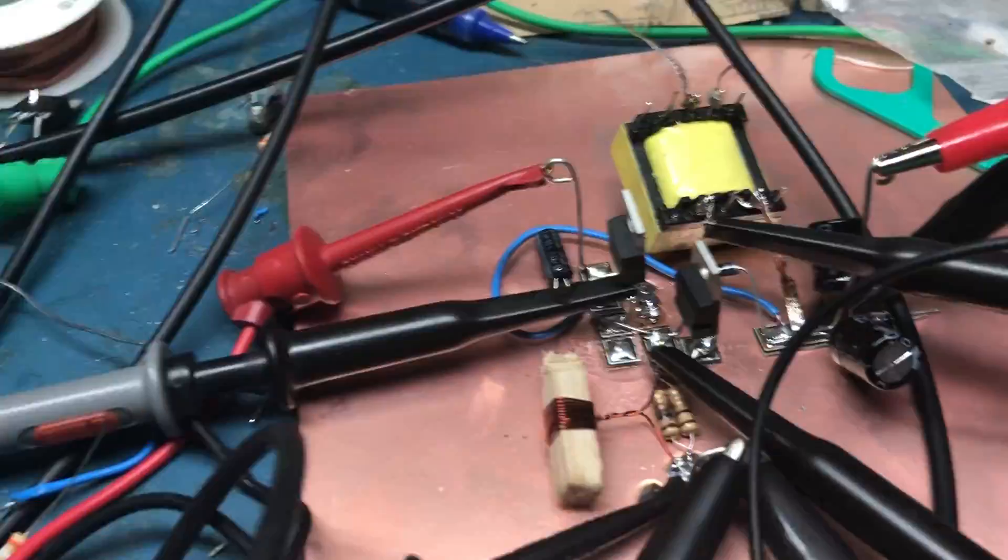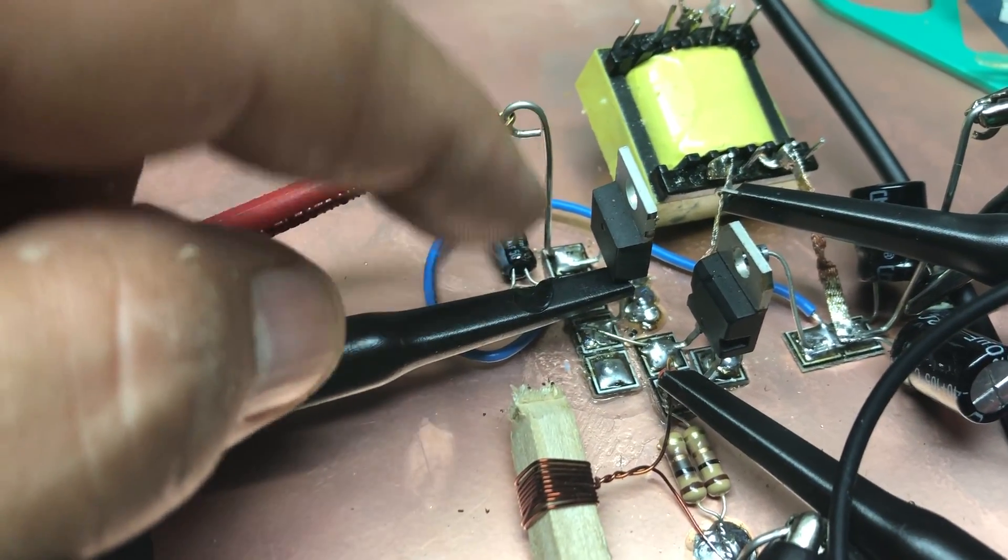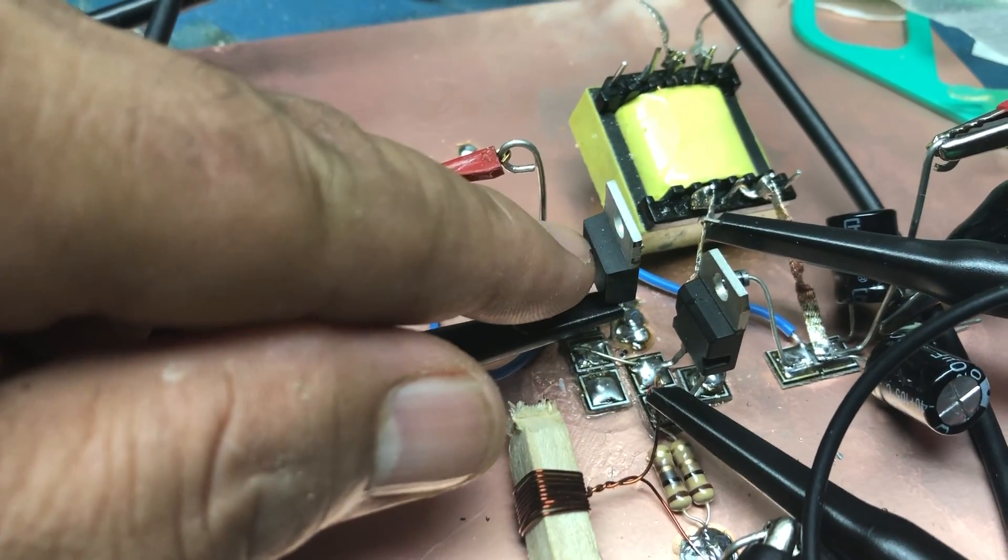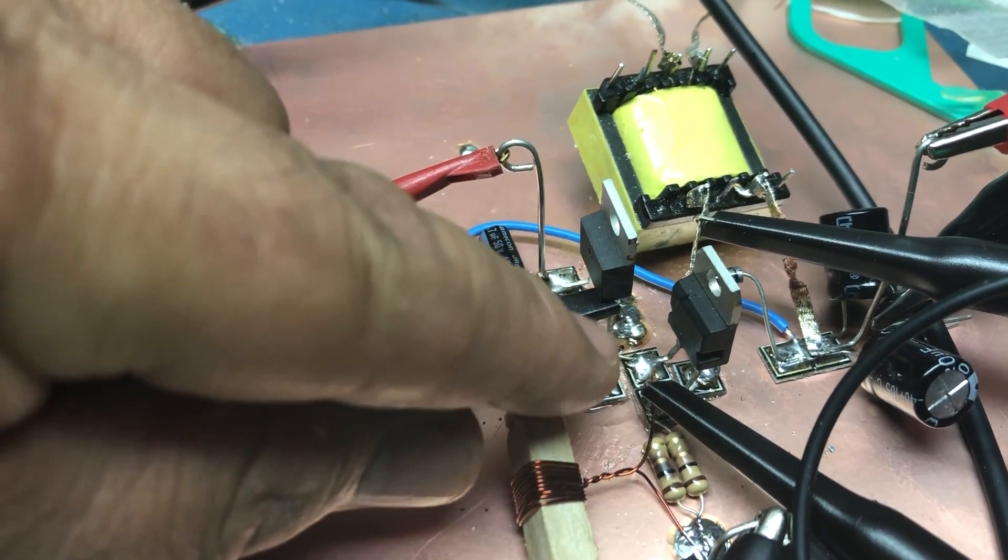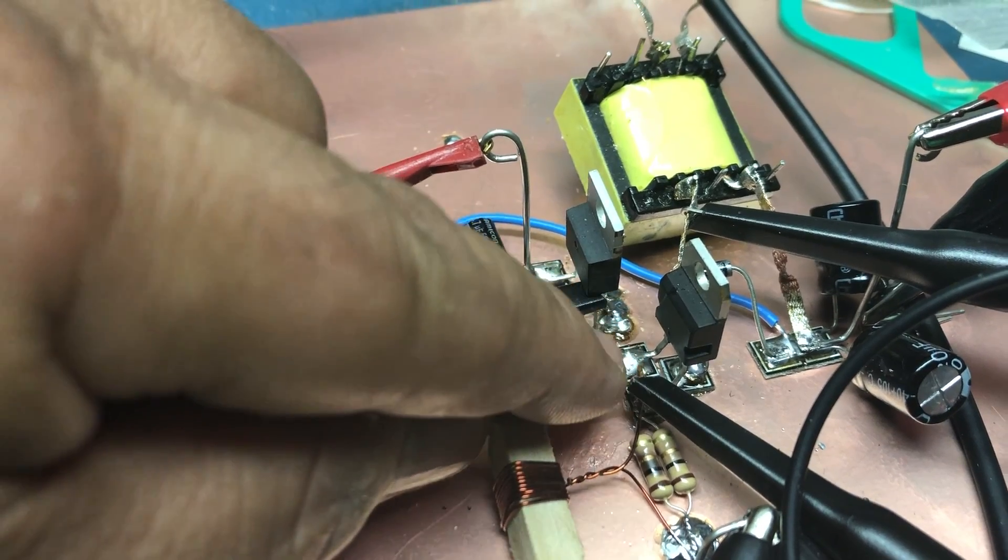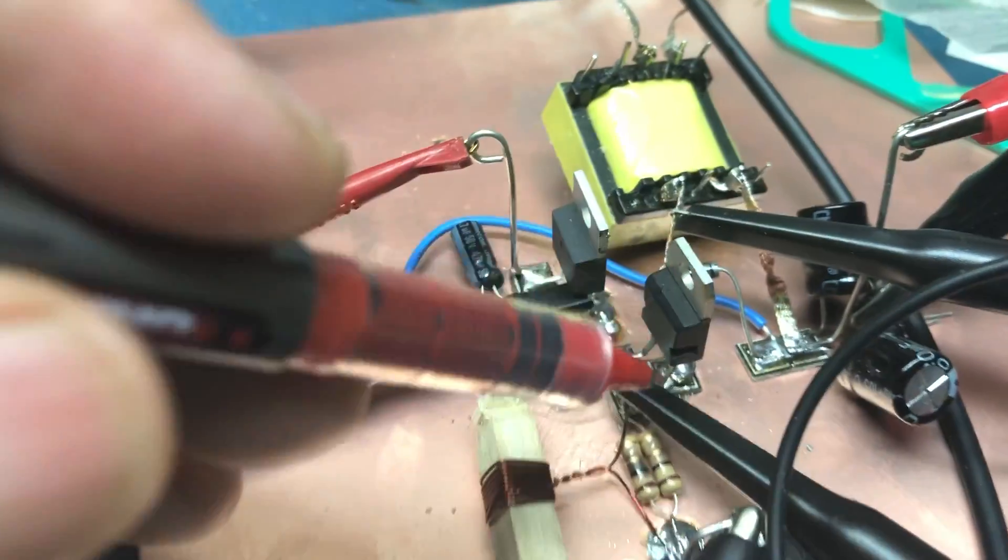In this case my function generator is connected here and then this is the TC4429. There's a connection from the output to the gate right here.